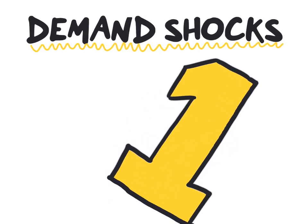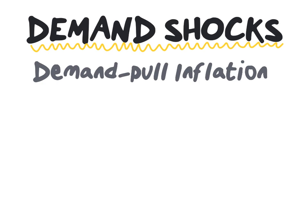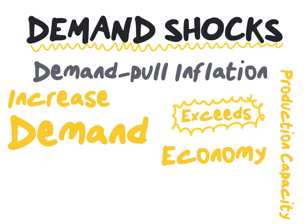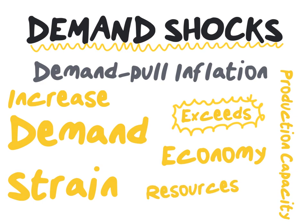Let's take a closer look at our first cause of inflation, namely demand shocks. Demand shocks give rise to demand-pull inflation. Demand-pull inflation is the situation in which the increase in demand exceeds the production capacity and capabilities of our economy, in turn straining the economic resources of that country. In simpler terms, demand-pull inflation occurs when our economy is producing at maximum capacity but demand continues to increase.